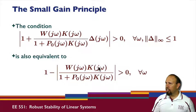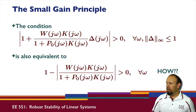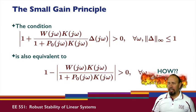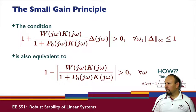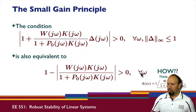How do we go from that condition to the final result? Notice that one condition does not involve delta. If we happen to choose a delta with magnitude equal to 1, then we can actually get the inequality directly. If we choose delta to be magnitude 1 with the phase being minus the phase of this quantity here, then we get that the inequality is satisfied for all omega.